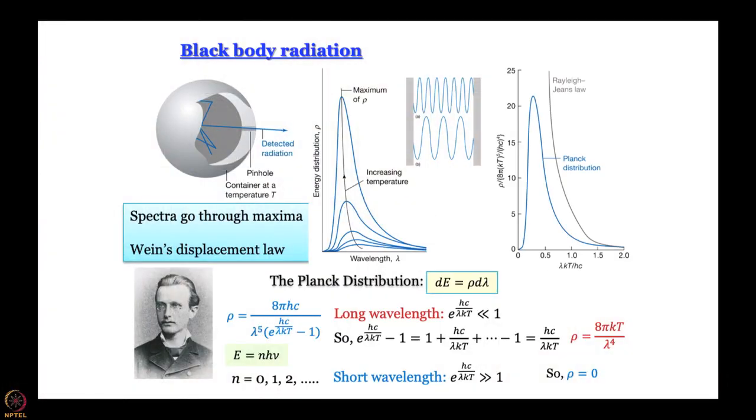In this module we are going to go a little further in our discussion of atomic structure. So far we have studied black body radiation and we have seen how Planck distribution explained the black body radiation nicely in the long wavelength regime as well as short wavelength regime, and how it led to this very important understanding that energy has to be quantized. This was a revolutionary idea and this is what laid the foundation of quantum mechanics.